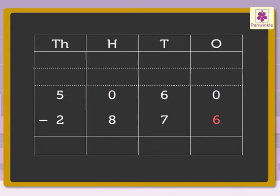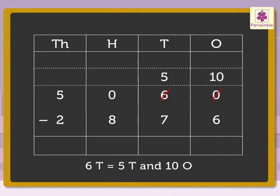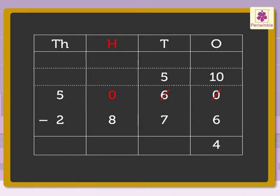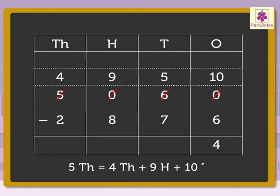We cannot subtract six from zero, so firstly let us regroup tens, as there are not enough ones. Thus, six tens is regrouped as five tens and ten ones. So, ten minus six is equal to four. Now, further, we need to regroup the thousands, as there are not enough tens and there is a zero in the hundreds place. Thus, five thousands is regrouped as four thousands plus nine hundreds plus ten tens.